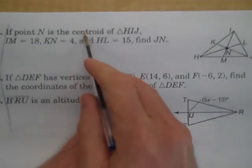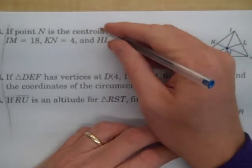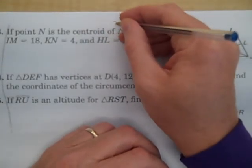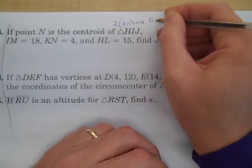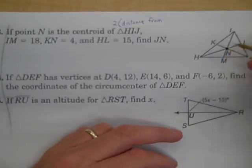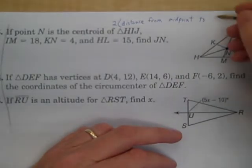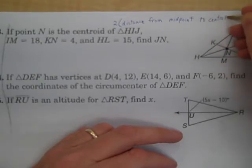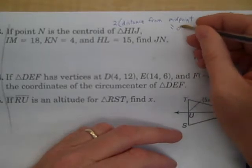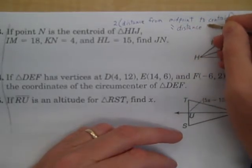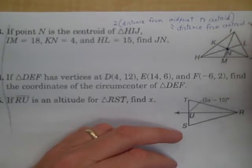The medians all meet at N. N is called the centroid. Therefore, what you need to know about the centroid, the centroid theorem, if you take 2 times the distance from midpoint to centroid, that will equal the distance from centroid to vertex.